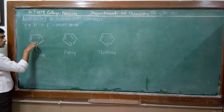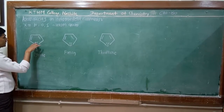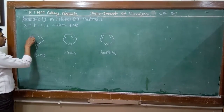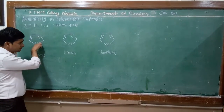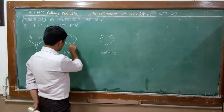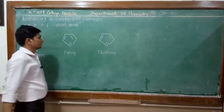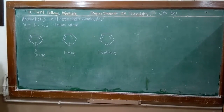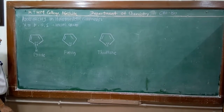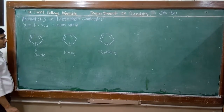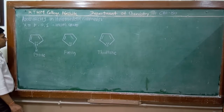The lone pair of electrons on nitrogen is conjugated with this ring — lone pair, single bond, double bond, single bond, double bond, single bond. In the case of furan or thiophene, this lone pair of electrons is also conjugated with the ring. Therefore if we apply the Hückel rule to these compounds, they are aromatic compounds.